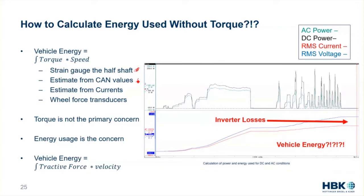We can estimate it from CAN values as shown earlier — though if you don't have the ability to calibrate this, it's difficult to do it right. We can also estimate from currents, but you really need a good characterization of the machine. If you do, you can say my current is 100 amps and my torque is 12 newton meters.